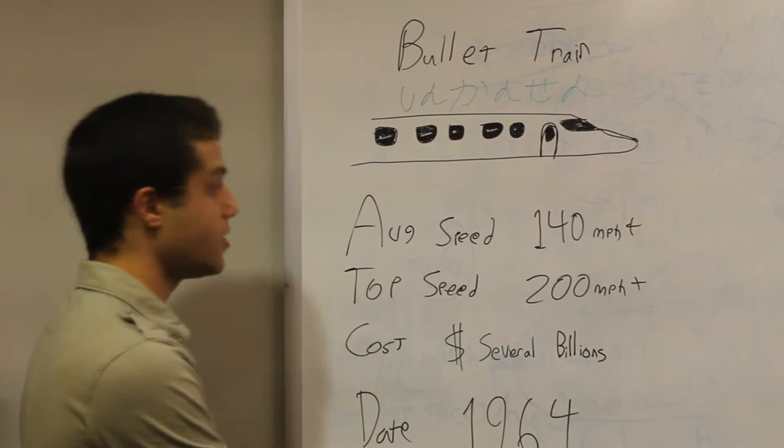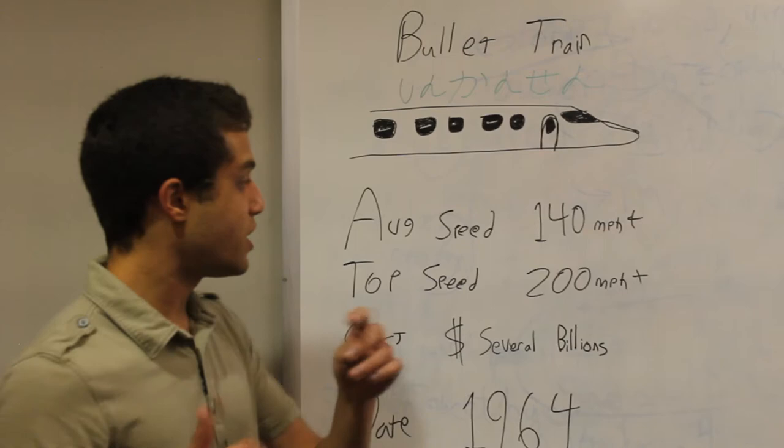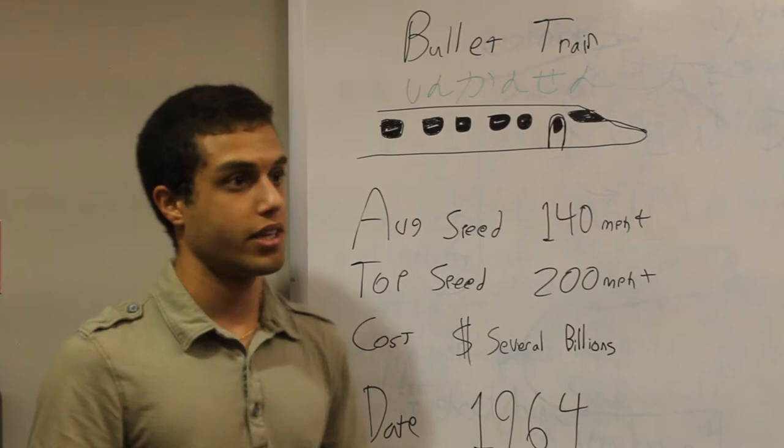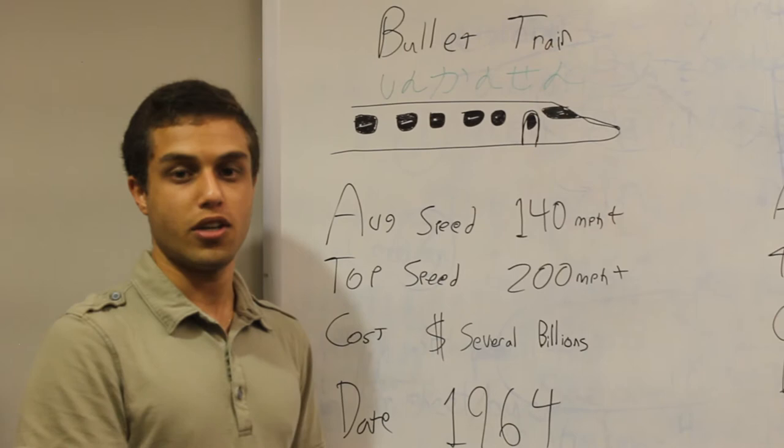A bullet train Shinkansen system was first introduced in 1964. And today they usually have an average speed of 140 miles an hour, top speed is 200 miles an hour. And their cost is the cheapest out of the three systems. They cost several billions to actually make.